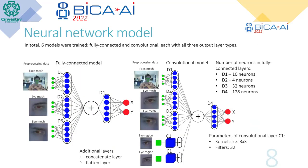In total, six models were trained — fully connected and convolutional — each with three output layer types. The fully connected model contains three input types: the face mesh input and eye mesh input are processed by fully connected layers. The convolutional model contains five input types; additionally, the eye region inputs are processed by convolutional layers.